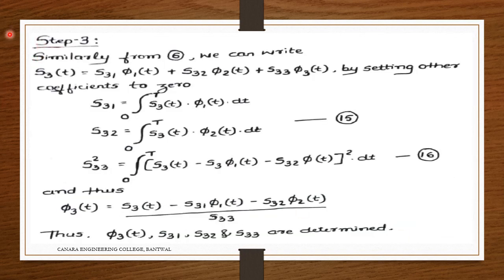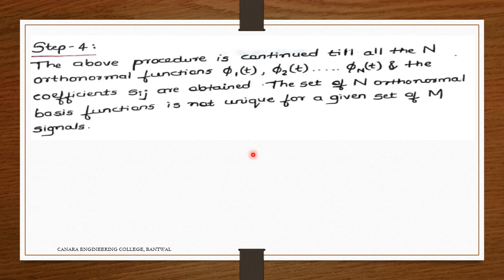Steps 3 and 4: The above procedure is continued until all N orthonormal functions pi_1(t), pi_2(t), up to pi_N(t) and the coefficients S_ij are obtained. The set of N orthonormal functions is not unique for a given set of M signals.